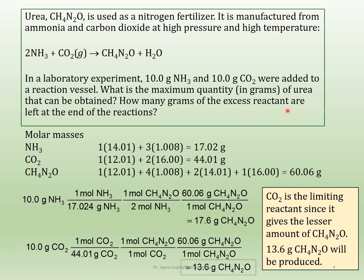For the second part: how many grams of excess reactant are left at the end? Since only 13.6 grams of urea was produced, some ammonia must be left over. Note: these two calculations are exactly the same structure, so if you want to save time, you can stop at the moles step and compare moles directly rather than converting all the way to grams — though it doesn't save much time overall.